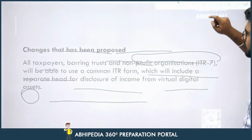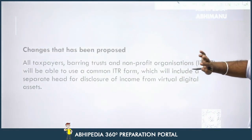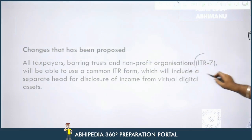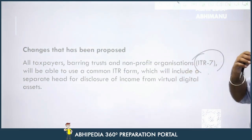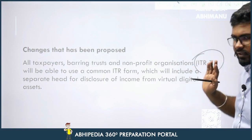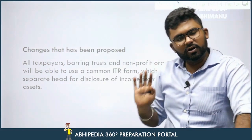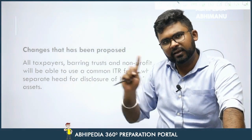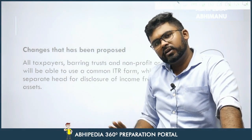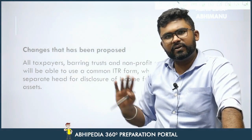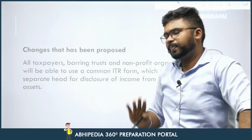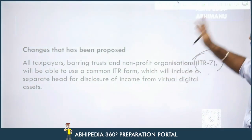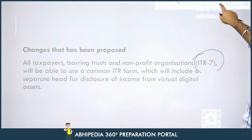Now, what changes have been proposed? All taxpayers — barring trusts and NPOs, which use ITR seven — will be able to use a common ITR form. So ITR one through six will be combined into one. ITR seven will remain different for trusts and NPOs, which will include a separate head for disclosure.